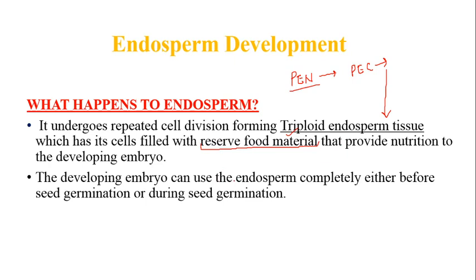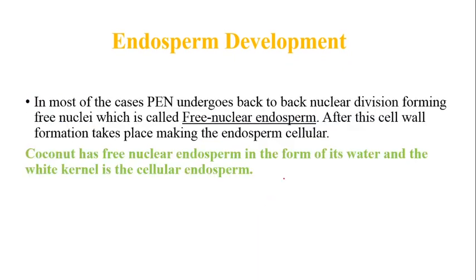The developing embryo can use the endosperm completely either before or during seed germination, depending on its requirement. In most cases, the primary endosperm nucleus undergoes back-to-back nuclear divisions forming free nuclei — this is called free nuclear endosperm. There is no cell wall development for some time; the endosperm undergoes repeated mitotic divisions without forming cell walls.